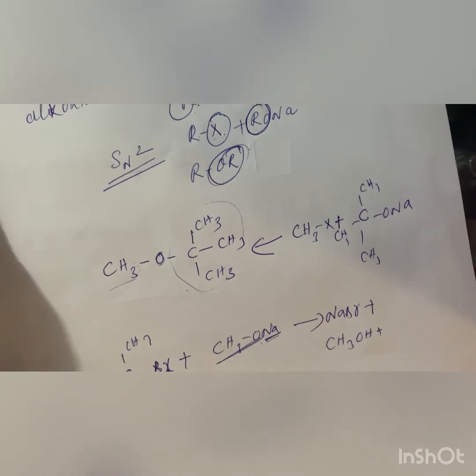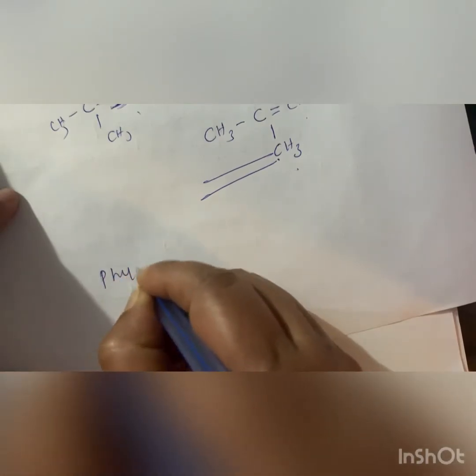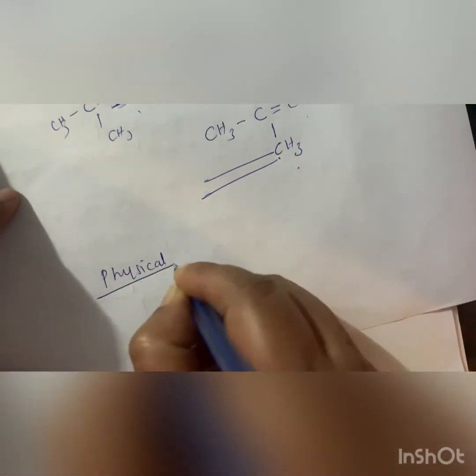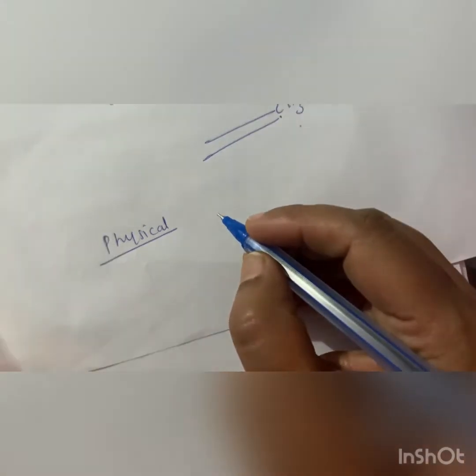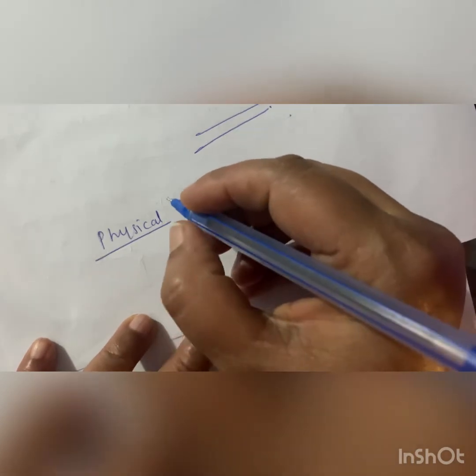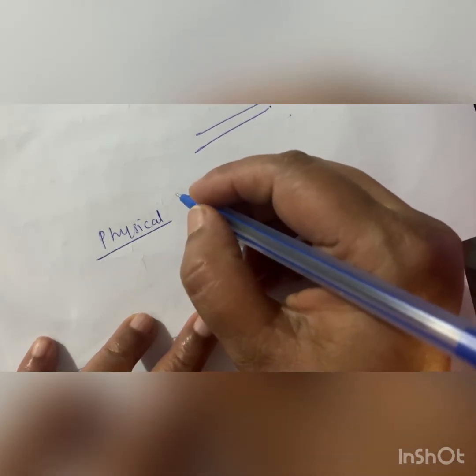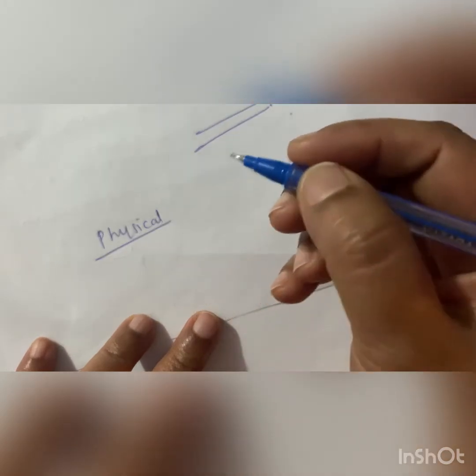Next are the physical properties of ether. Ethers can dissolve in water because they can form hydrogen bonds with water. However, the boiling point of ether is very, very low.